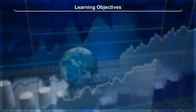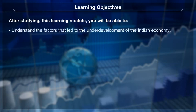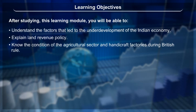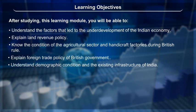Learning Objectives: After studying this learning module, you will be able to understand the factors that led to the underdevelopment of the Indian economy, explain land revenue policy, know the condition of the agricultural sector and handicraft factories during British rule, explain foreign trade policy of the British government, and understand the demographic condition and existing infrastructure of India.